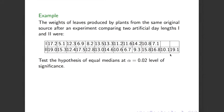Now we look at an example from the notes. The example concerns the weights of leaves produced by plants from the same original source after an experiment comparing two artificial daylights, labelled sample 1 and sample 2. The data is independent and the two samples do not have the same size, so N1 and N2 will differ. We test the hypothesis of equal medians at the two percent level of significance.